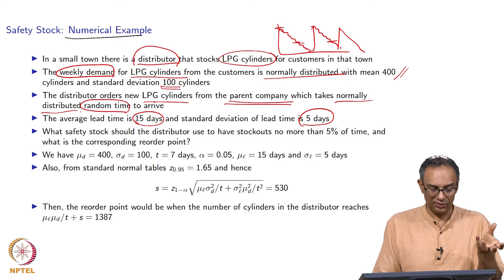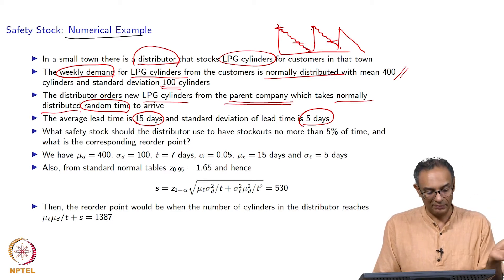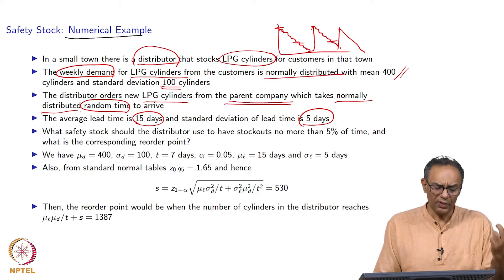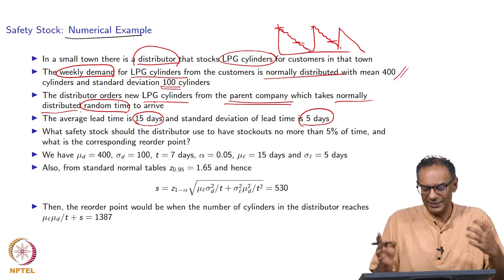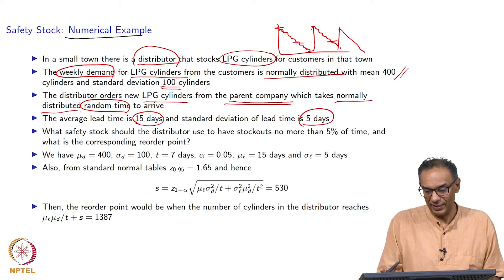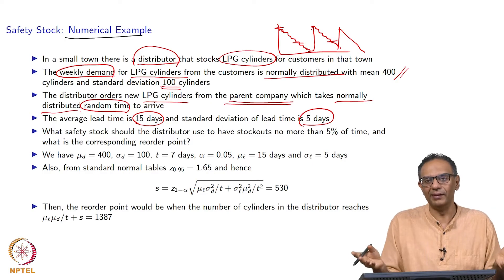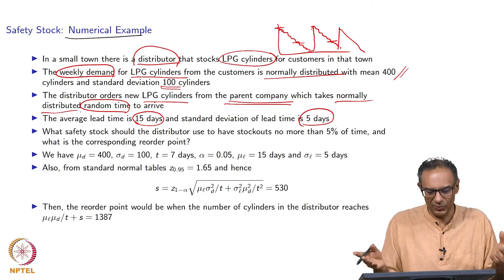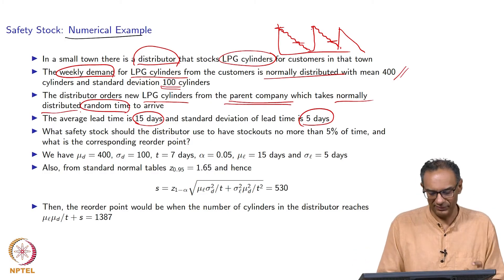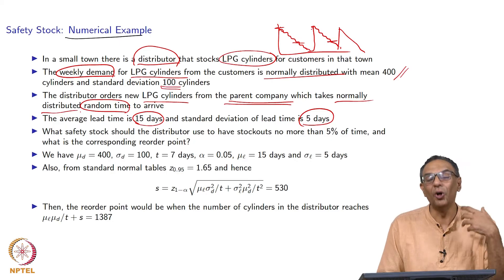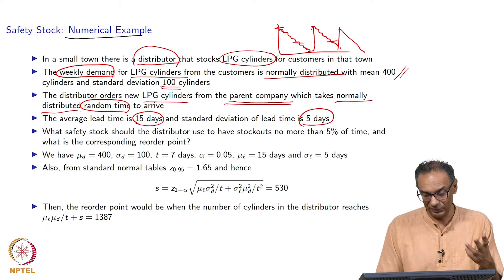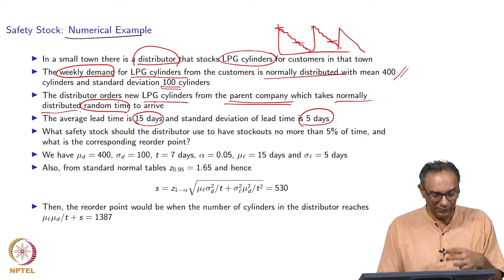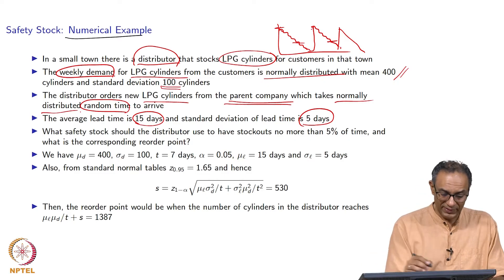The demand is after all a discrete quantity, but we went ahead and assumed normal distribution. Especially in the cylinder case, when demand is as high as 400, these are practically continuous values, so we do not need to worry about the discreteness. It is a reasonable approximation and works out well.